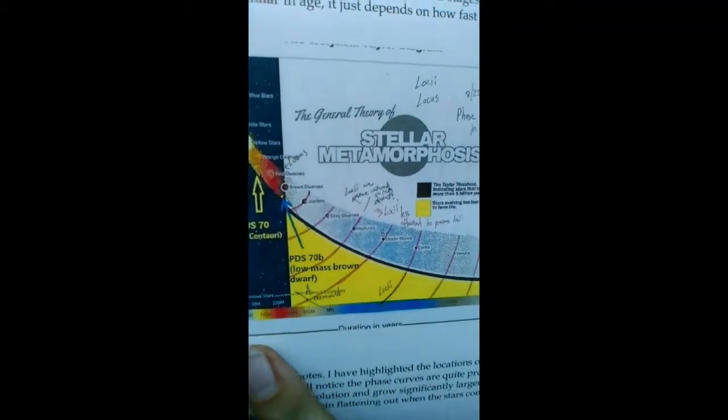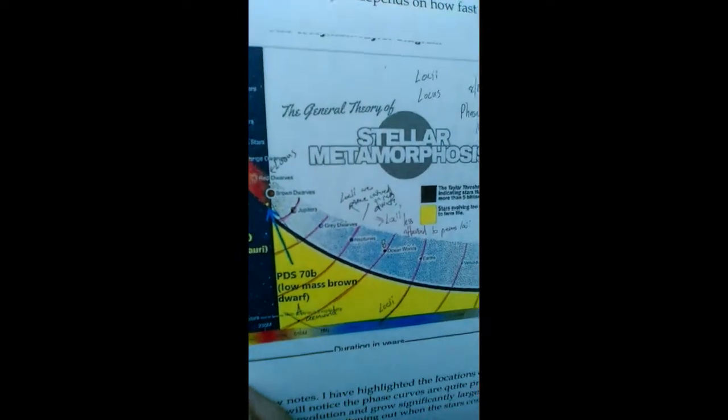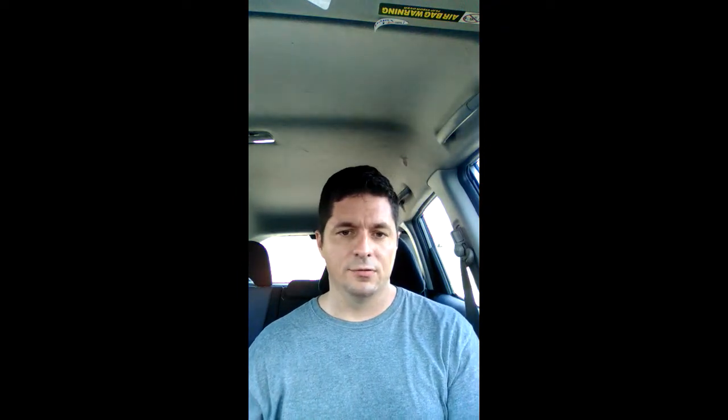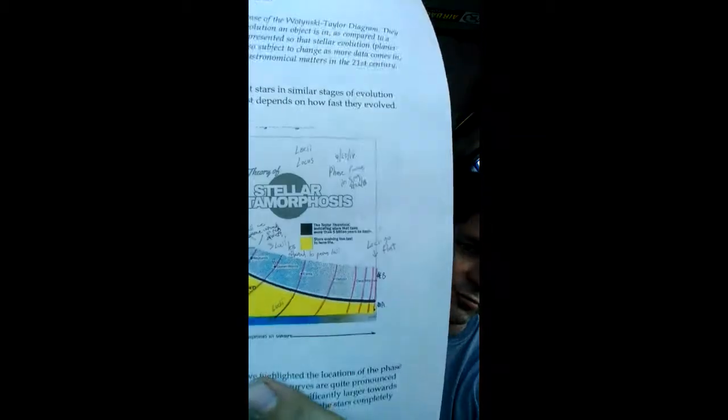On here I have A as an ocean world and B as an ocean world — I'll put it at the bottom of this video. They're at the same stage of evolution but very, very different in age. One is a lot older than the other because it evolved quicker due to mass loss and other issues. The phase curves flatten out as you move towards the nearest dead portion of this diagram.